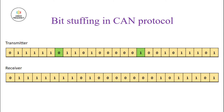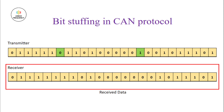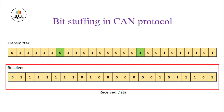After de-stuffing, we get back the original data that was received from the transmitter. Overall, on the receiver side, the receiver automatically removes the stuffed bits and processes the original data correctly.